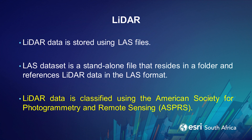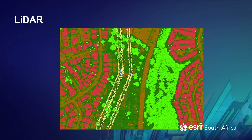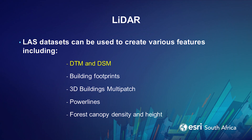LiDAR data needs to be classified using the ASPRS standards, which assign a classification code to every point in the data which matches the feature it represents on the ground. In a classified LAS dataset, the brown points represent ground, the red points represent buildings, the different shades of green represent vegetation, the yellow points represent power lines, and the blue points represent transmission towers. A LiDAR dataset can also be used to create other features including DTM and DSM, building footprints, 3D building multi-patches, power lines, or estimates of forest canopy density and height.